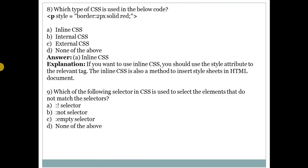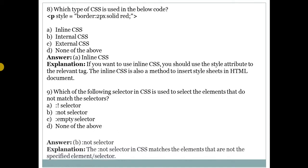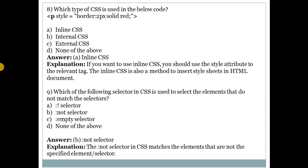Ninth question: which selector in CSS is used to select elements that do not match the selectors? There are different types of selectors in CSS. Answer is B — the :not() selector. The CSS :not() selector matches elements that are not the specified element.